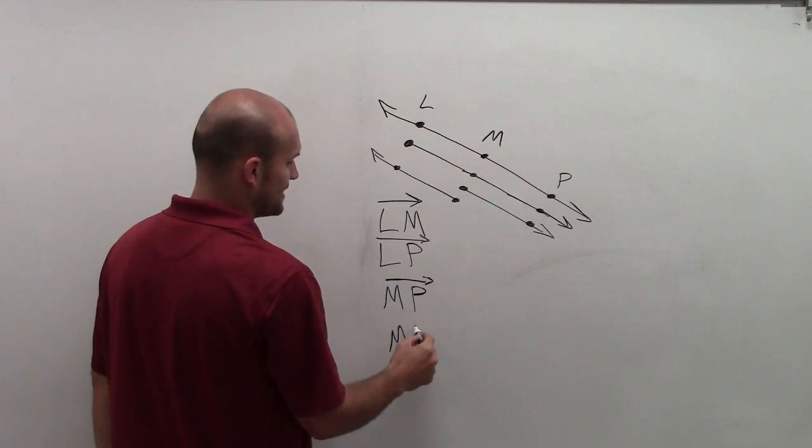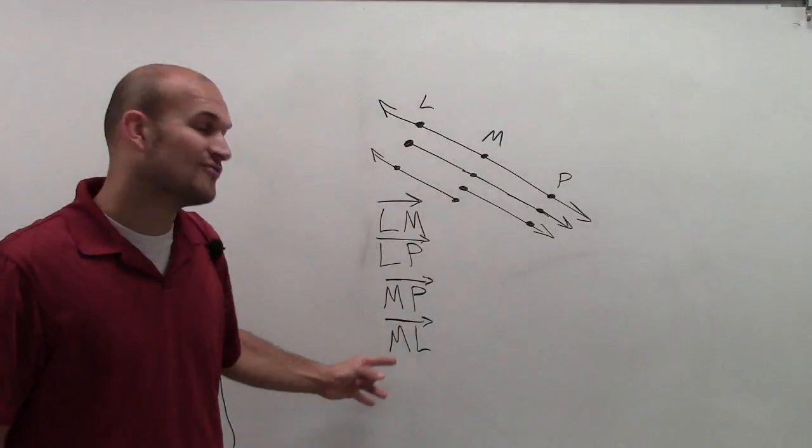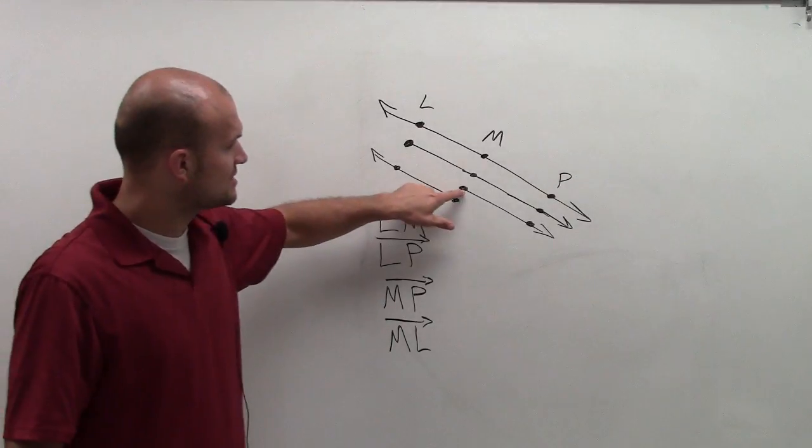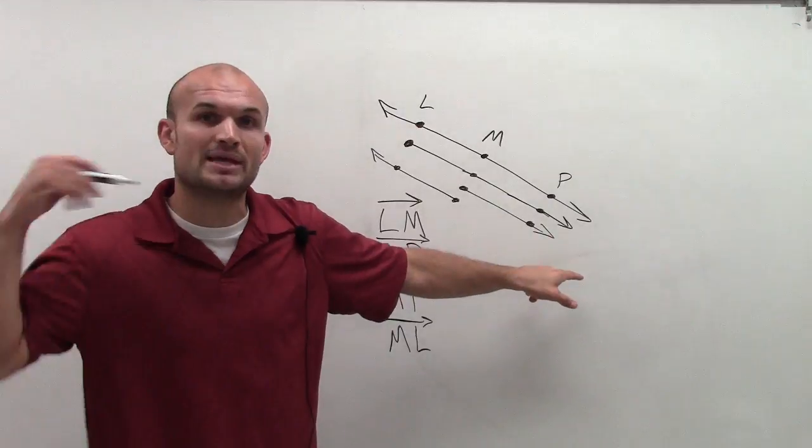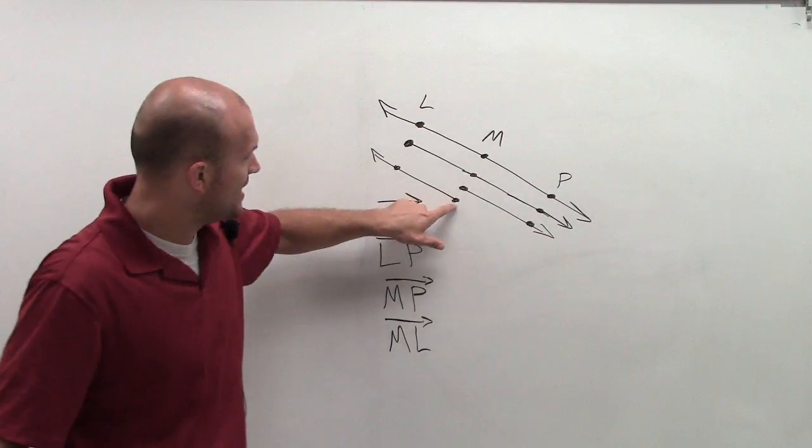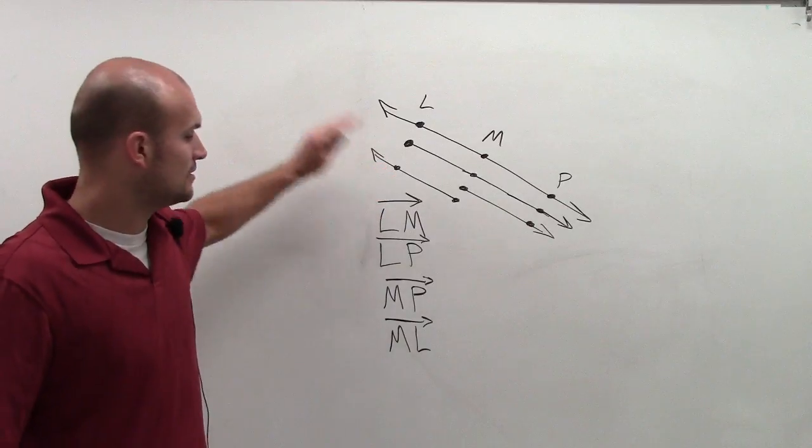So the main important thing that I want you to see about this is that I'm writing my endpoint first. So if it goes to this direction, that's your MP. It starts at M, and then it goes through P infinitely. And then for this one, ML, it starts at M, and then goes through point L infinitely.